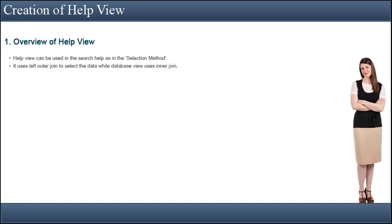You create a help view if a view with an outer join is needed as a selection method of a search help. The selection method of a search help is either a table or a view. If you want to select data from several tables for the search help, you have to use a database view as the selection method. However, a database view always implements an inner join. If you need a view with an outer join for the data selection, you must use a help view as the selection method.